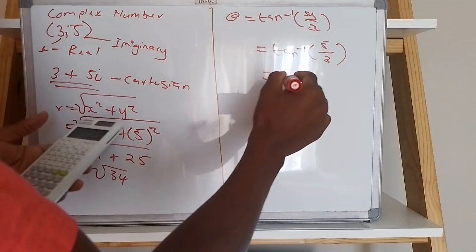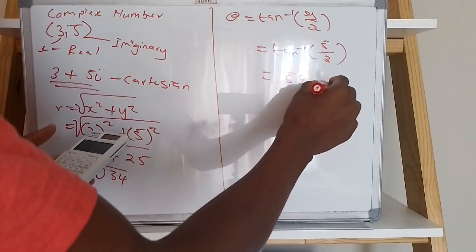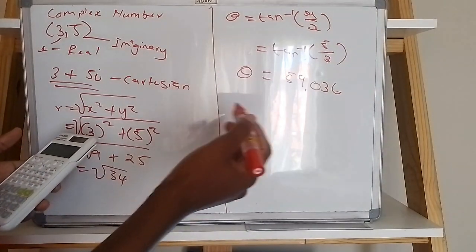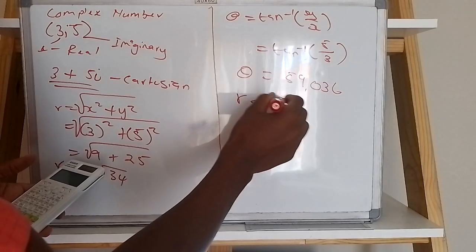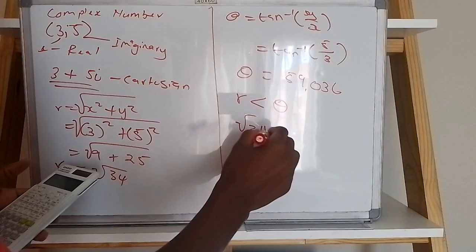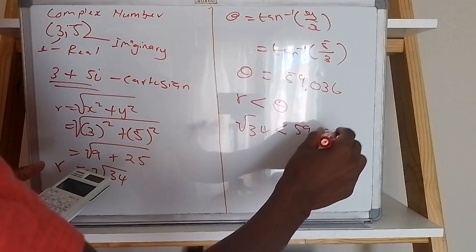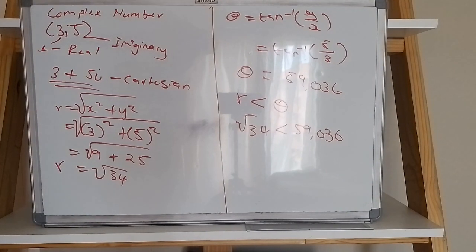The result is approximately 5.83 at angle 59.04 degrees. When you represent this in polar form, all values use r and theta. I hope you understand and enjoyed this. If you are watching, please share the content with your friends and subscribe to our channel.